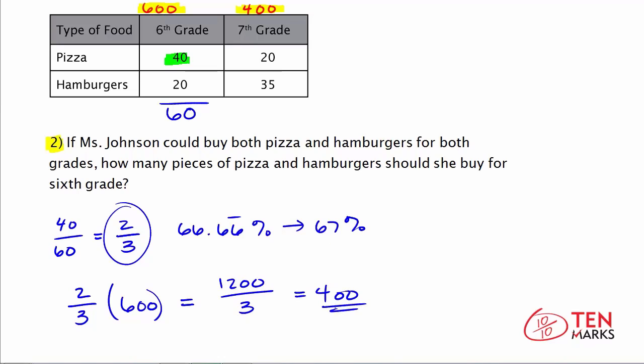That means if she's going to buy pizza, she should buy enough for 400 students. Now let's take a look. You can figure out how many hamburgers she could buy by doing subtraction. If you know the total number of students is 600, and 400 students should get pizza, subtract those away and you're left with 200 hamburgers for the remaining students. So this would be 200 hamburgers and 400 pizzas.